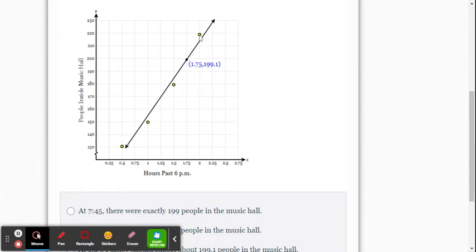So the yellow points, that was her scatterplot of data that she used. Now those points are the actual recording of the data. At those times, how many people were inside the music hall that long after 6 p.m.? Going here 0.25 hours, a half hour later, three quarters of an hour, one hour past, so that would be 7 o'clock right there, this is 8 o'clock, and so on.